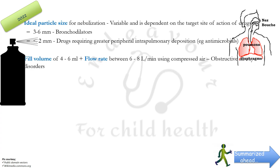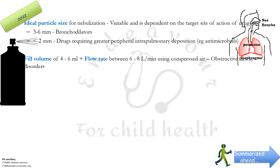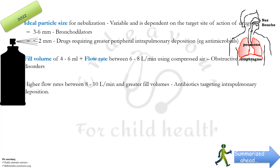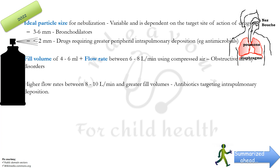A fill volume of the nebulization chamber of 4 to 6 ml and a flow rate of 6 to 8 liters per minute using compressed air is primarily used for obstructive airway disorders like bronchial asthma. Higher flow rates of up to 8 to 10 liters per minute and even greater fill volumes are used for drugs meant for intrapulmonary deposition — those which need to be deposited in the alveoli and not the bronchioles.